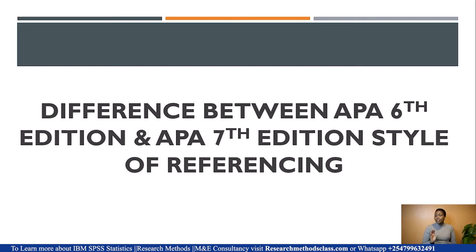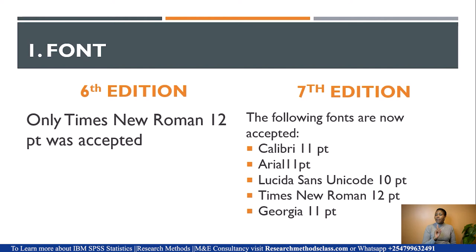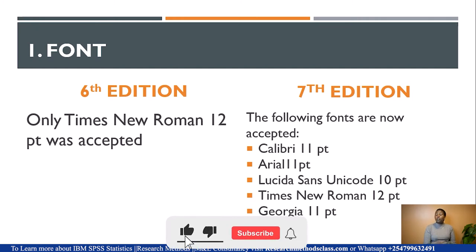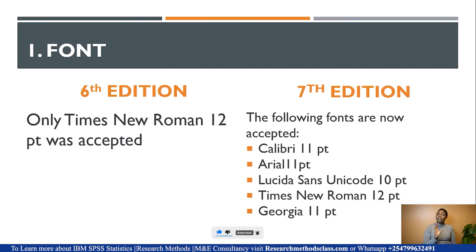The first difference is the font. In the 6th edition, only Times New Roman 12 point was accepted. In the 7th edition, you can use Calibri 11 point, Arial 11 point, Lucida Sans Unicode 10 point, Times New Roman 12 point, or Georgia 11 point. However, there must be consistency of font throughout the document — if you choose Georgia, use Georgia at 11 point consistently across the entire document.